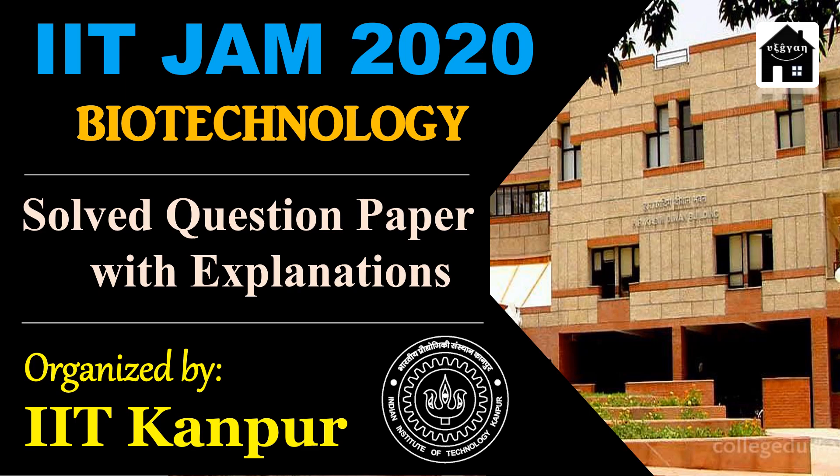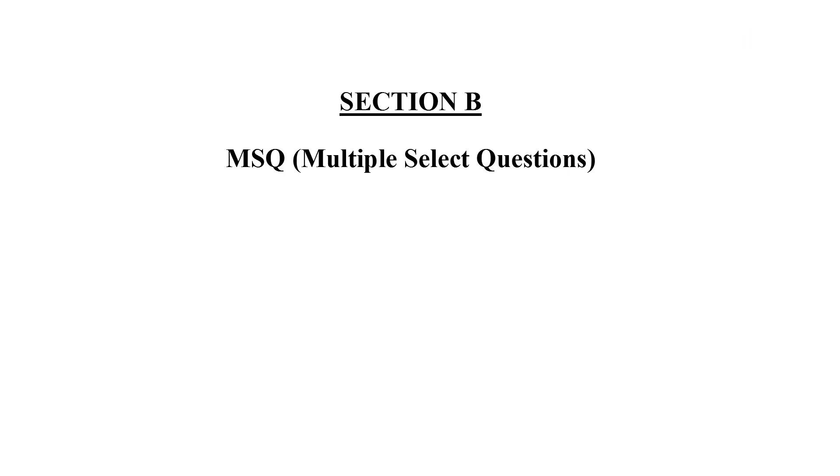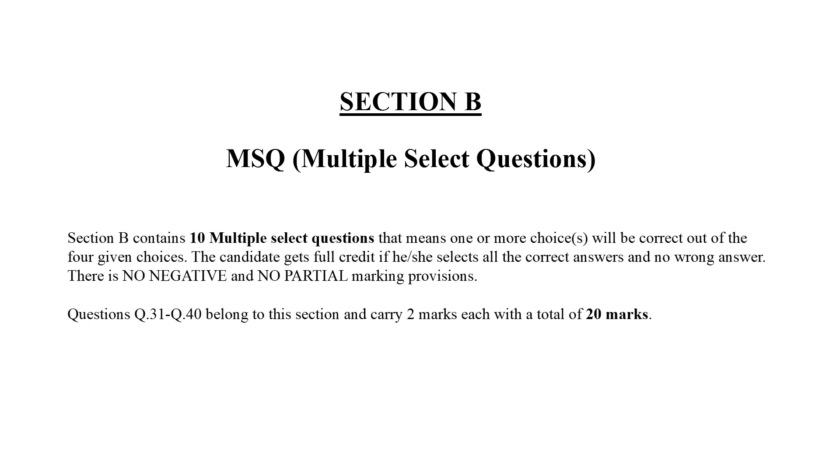Today, we will be talking about the section B, i.e. the multiple select questions. This section contains 10 multiple select questions, that means one or more than one option will be correct out of the four given choices. The candidate will get full credit only if he selects all the correct answers and no wrong answer. There is no negative marking and there is no partial marking. Questions 31 to question 40 of the paper will belong to this section and carry 2 marks each, making this section a total of 20 marks.